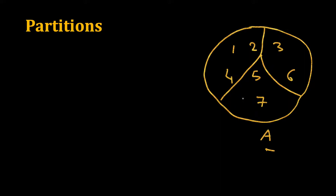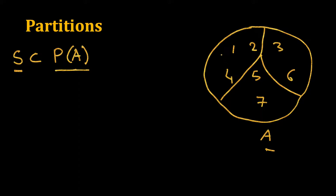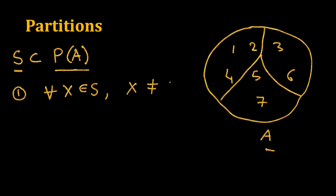Let's write the formal definition. A partition of a set A, let's call it S, is a subset of the power set of A. Remember, the power set of any set is the set of all possible subsets including the null set. S will be a set of sets, but not the complete power set, because it should not have sets with common elements. S should satisfy three properties. First, for all sets X belonging to S, X should not be the empty set, because adding the empty set adds nothing new.